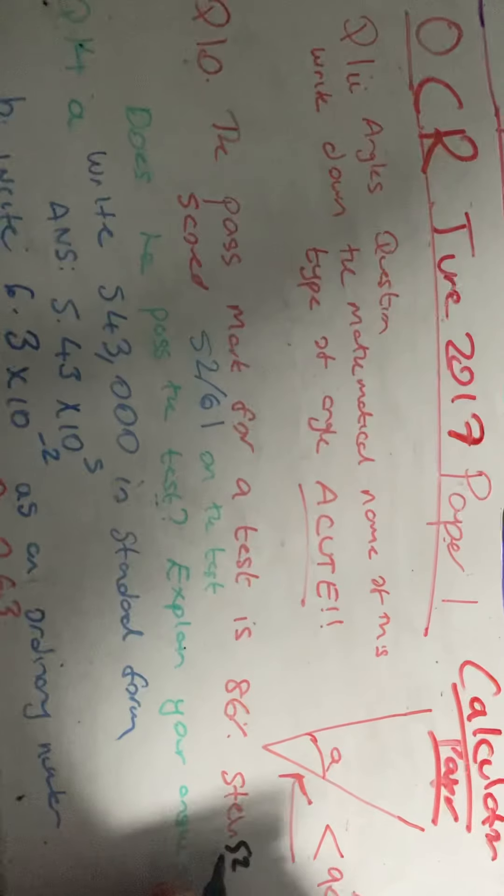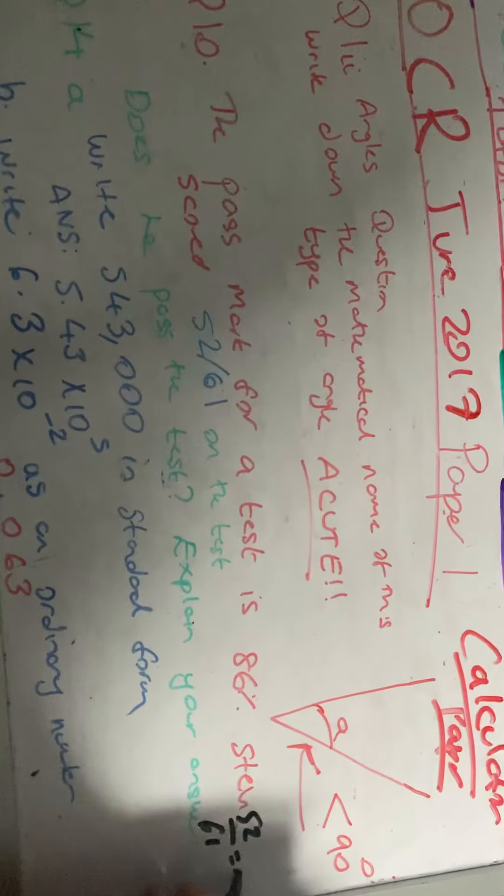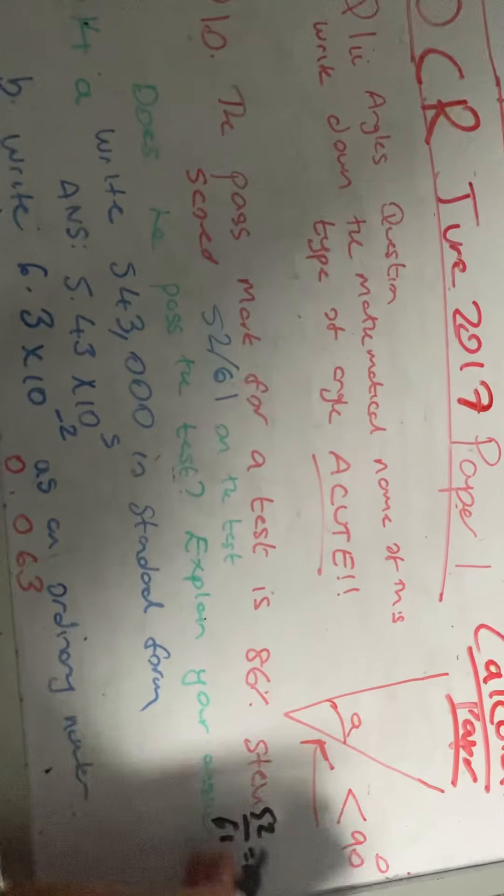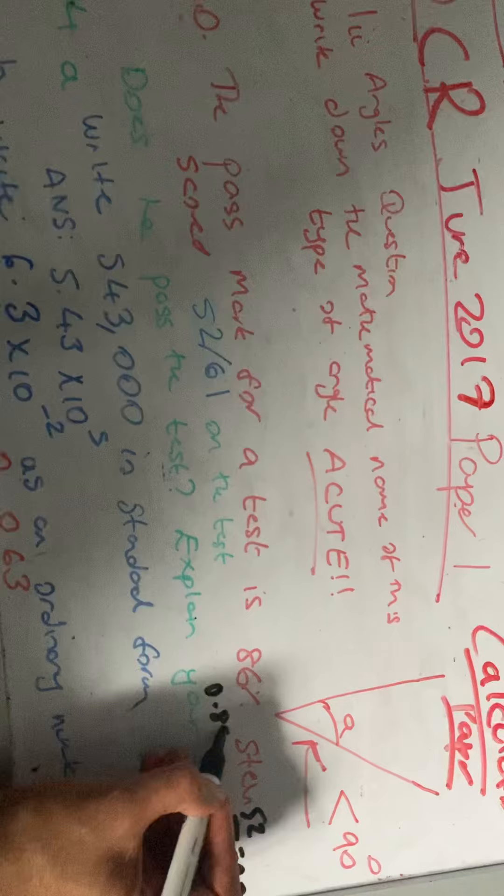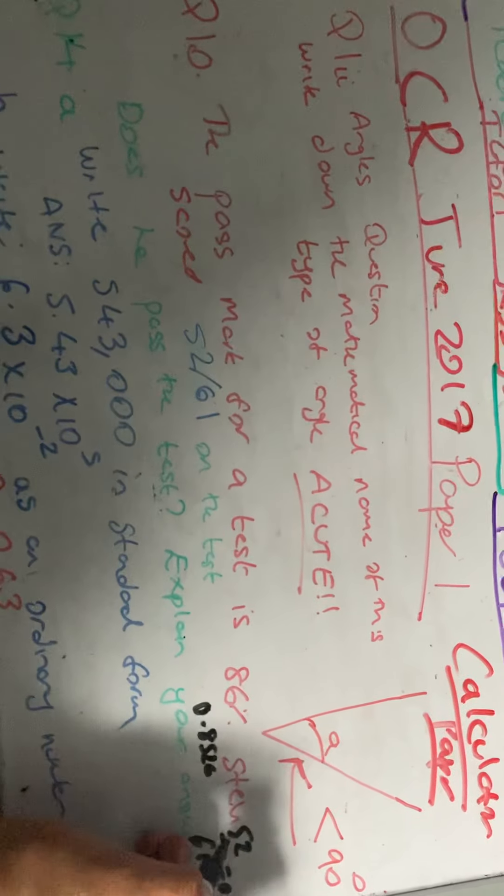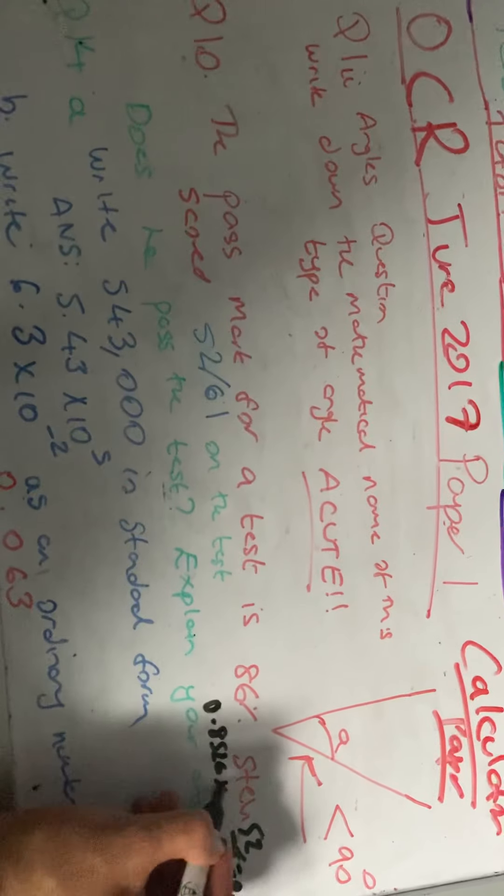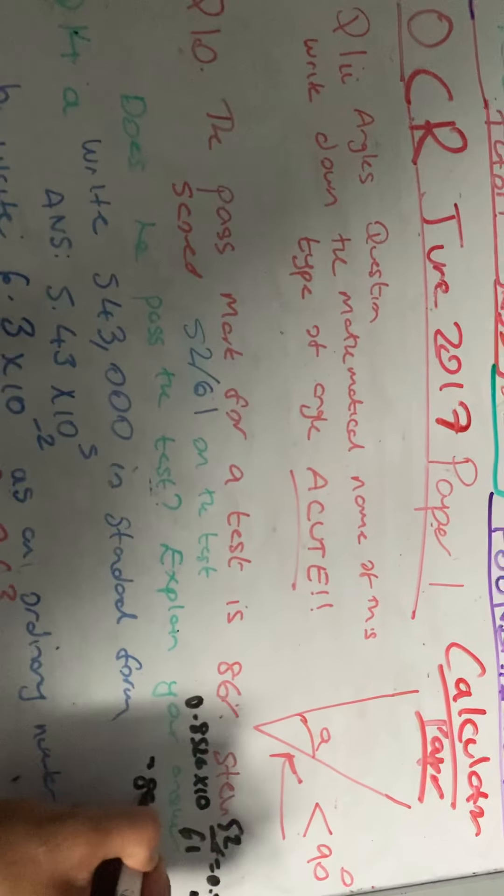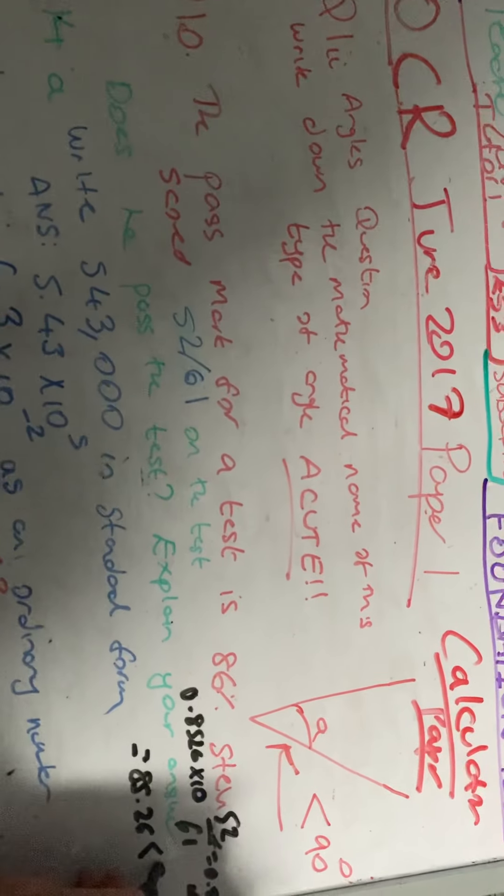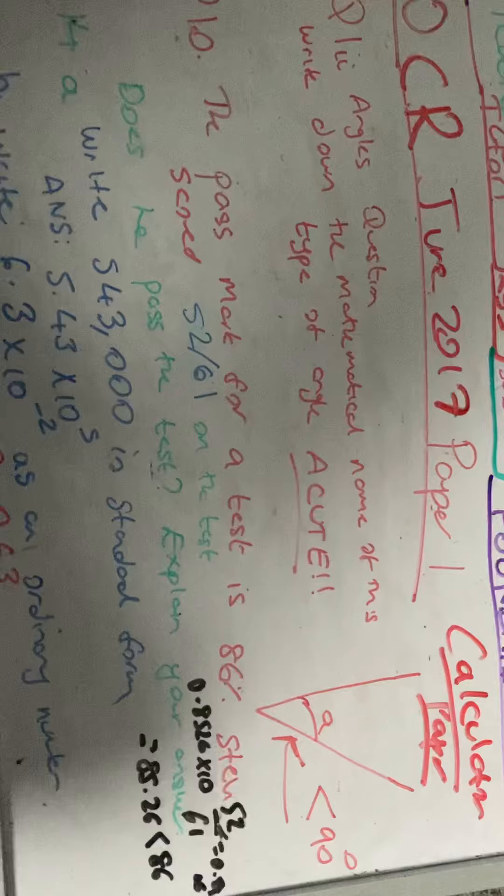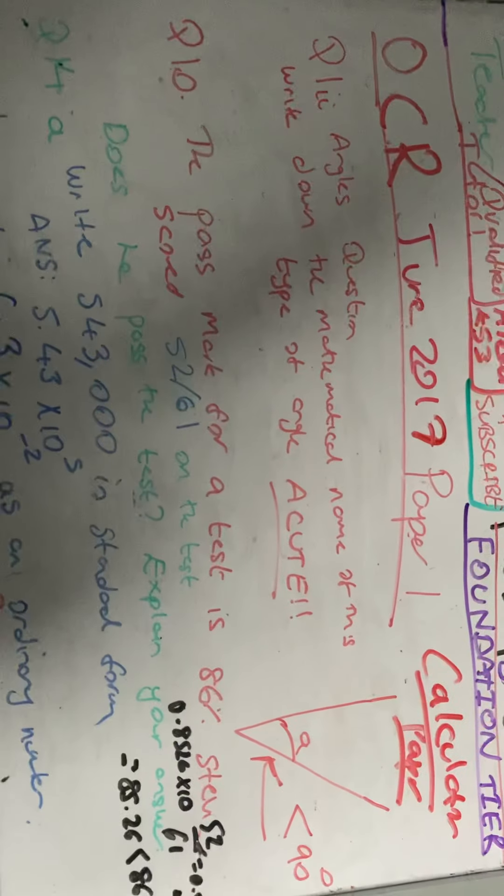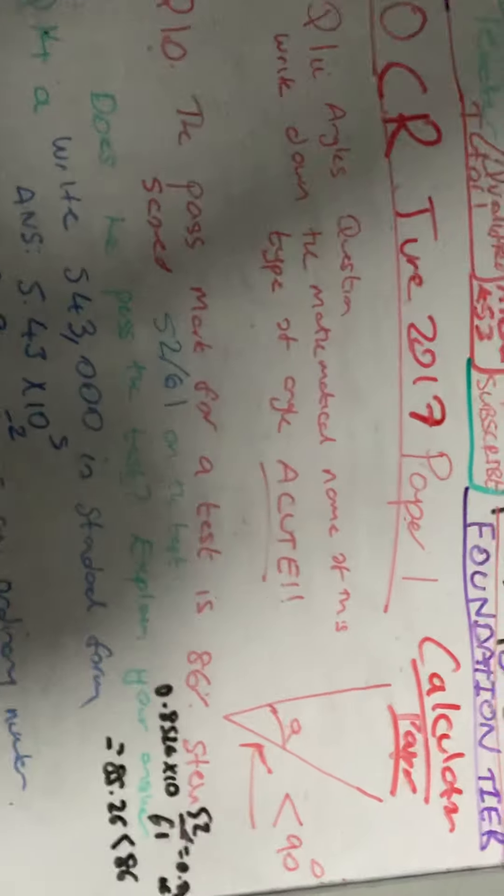52 divided by 61 is 0.8526. Sorry, the answer is no. It's 86, sorry. So it's 85.26. That's less than 86. So my answer is incorrect, sorry. Simon does not pass the test because 85.26 is smaller than 86.